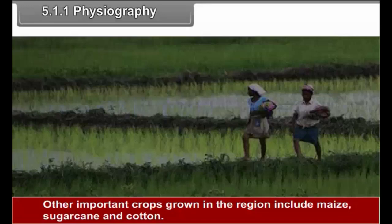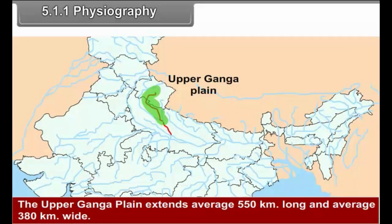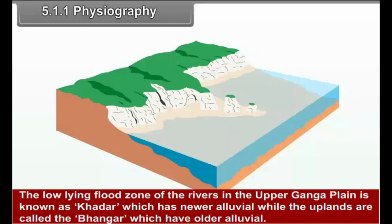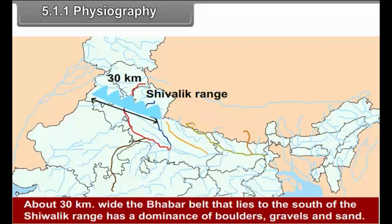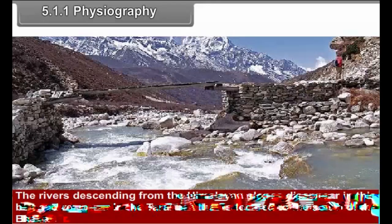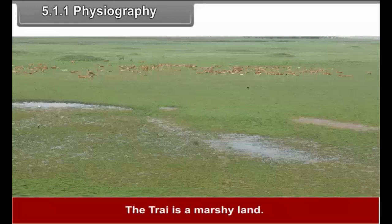Other important crops grown in the region include maize, sugarcane and cotton. The upper Ganga Plain extends approximately 550 km long and 380 km wide. It is located in western Uttar Pradesh. The low-lying flood zone of the river in the upper Ganga Plain is known as Khadar, which has newer alluvial, while the uplands are called the Bhangar, which have older alluvial. About 30 km wide, the Bhabar belt lying to the south of the Shivalik range has a dominance of boulders, gravels and sand. The rivers descending from the Himalayan slopes disappear in this belt and reappear in the Tarai belt located to the south of Bhabar. The Tarai is a marshy land.